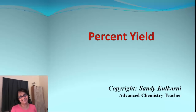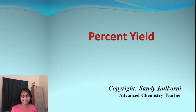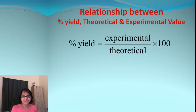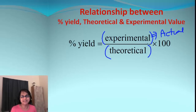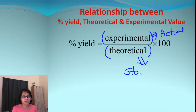Hey kids, Miss Kulkarni here. In this video we are going to discuss the calculations for percent yield in a chemical reaction. What actually is percent yield? There is a simple formula: percent yield equals experimental yield divided by theoretical yield times 100. Experimental yield is what you actually get in a lab — the actual yield. Theoretical yield is what we find using stoichiometry.